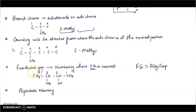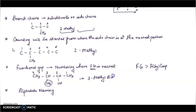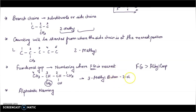Let's name this compound — pause the video and try. The answer is: methyl group is at the third position, there are four carbon atoms that is 'but', and the alcohol group is at the second carbon atom. So the name is 3-methylbutan-2-ol.